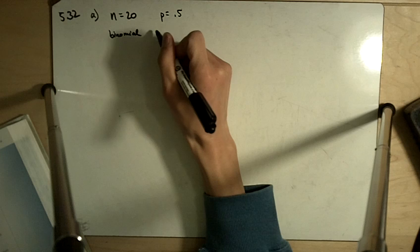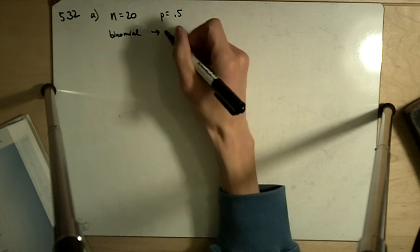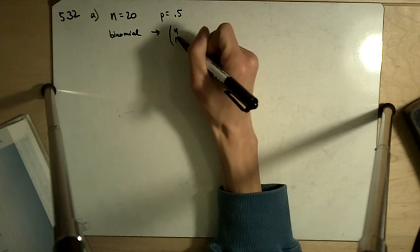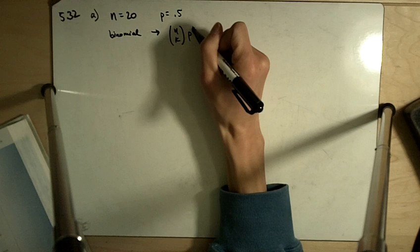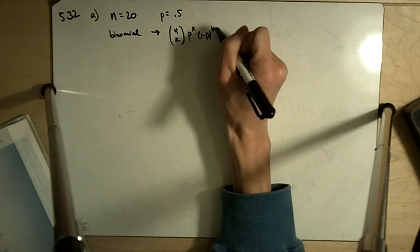The binomial is going to give us an exact probability and that's going to be n choose k, p to the k times 1 minus p to the n minus k.